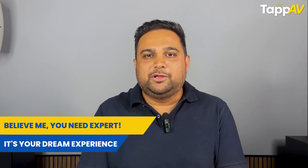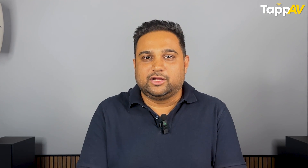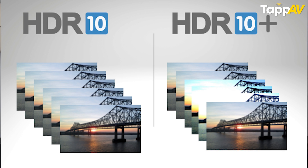The world always wanted something more, and that is where the need for dynamic metadata came in — different settings for each frame of content — and HDR10+ was born. In HDR10+, the color depth remains the same at 10-bit, meaning 1 billion colors on screen. However, the brightness, contrast, and color settings now change for each and every frame of content. That is why HDR10+ provides a much more superior viewing experience compared to standard HDR10.